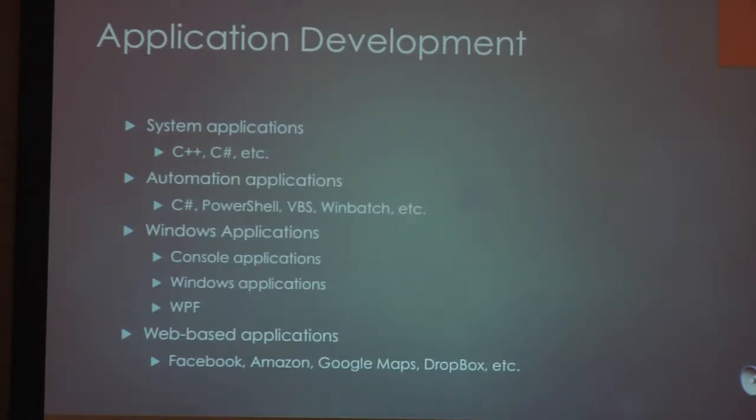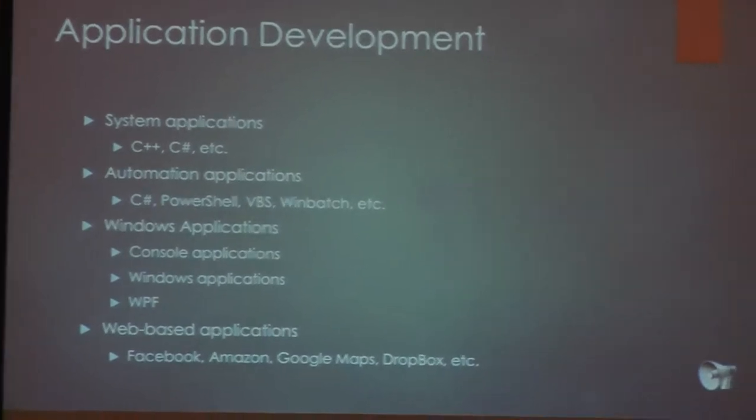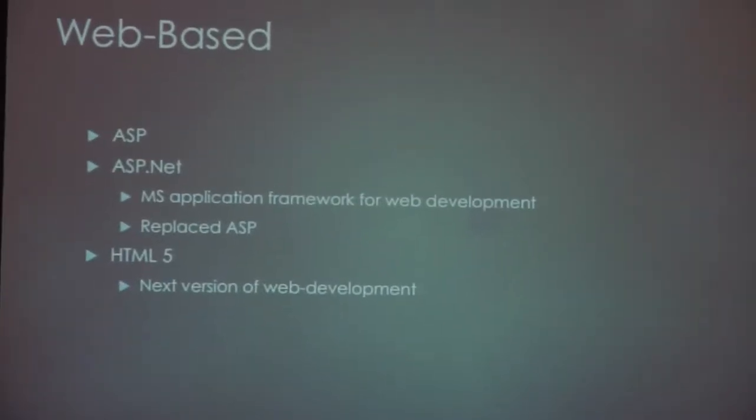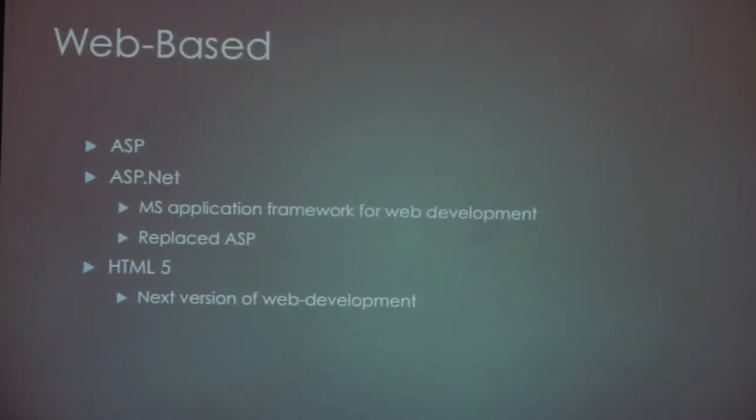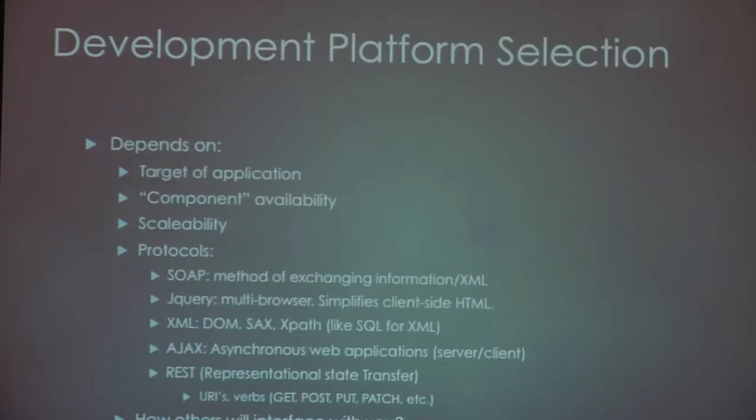If you want to write Windows applications, you may want to look at a console app, a Windows app, or base your app on Windows Presentation Framework, which kind of replaces Windows Forms. For web-based applications, you can use objects like Google Maps API, Amazon, and Facebook. For web-based on Windows, there are three main platforms: ASP, then ASP.NET which replaced ASP, and HTML5 which a lot of websites are written on today.